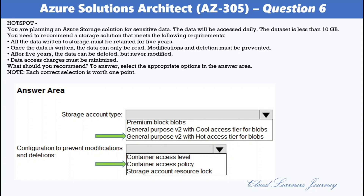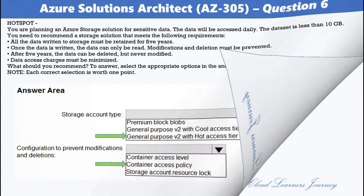Immutable storage for Azure Blob Storage enables users to store business-critical data in a write-once-read-many (WORM) state. While in a WORM state, data cannot be modified or deleted for a user-specified interval. By configuring an immutability policy for blob data, you can protect your data from overrides and deletes.